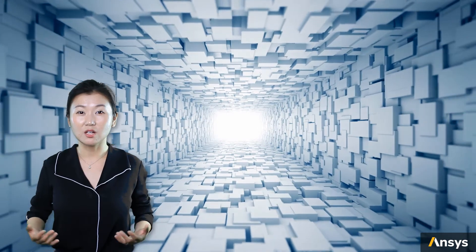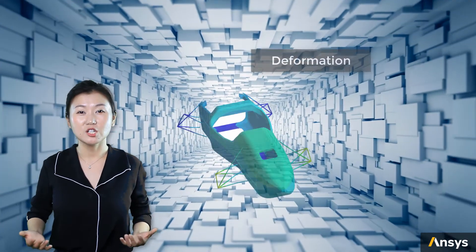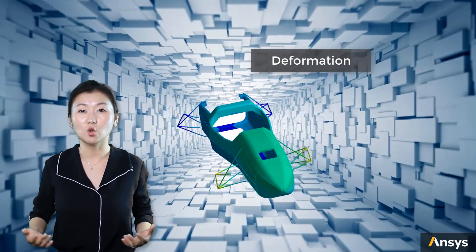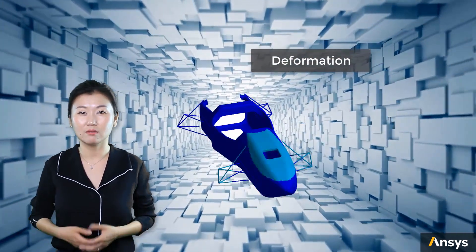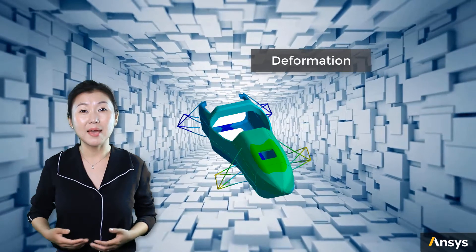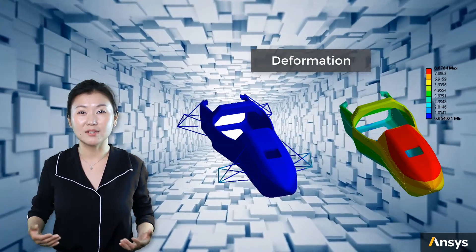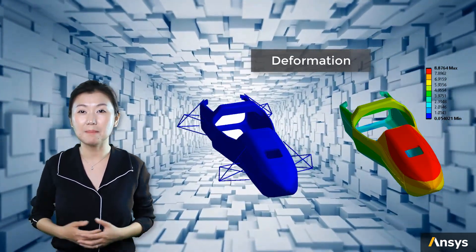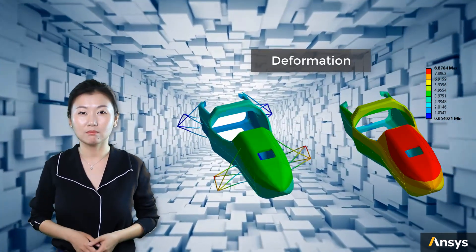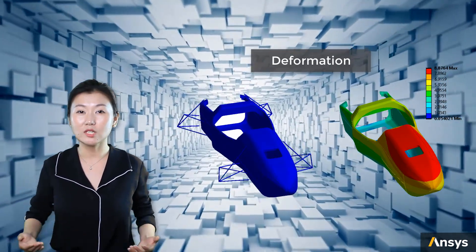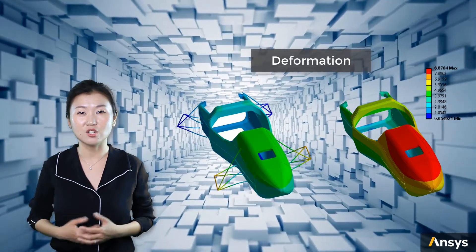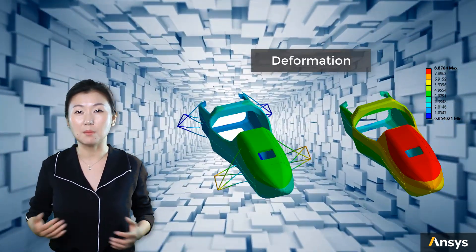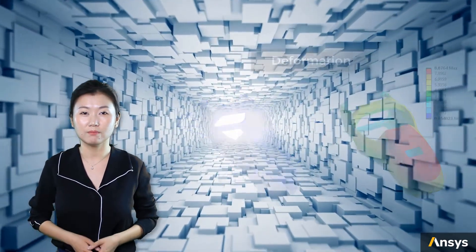The deformation of the simulation shows obvious torsional movement over the chassis. The maximum deformation is about 9 mm over the main body. Here we're excluding the connection rods so that we can focus on the main structure.